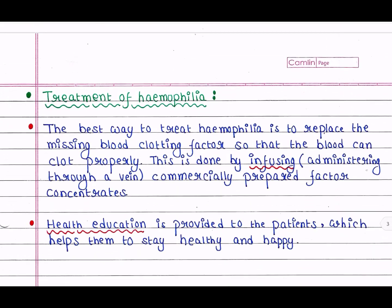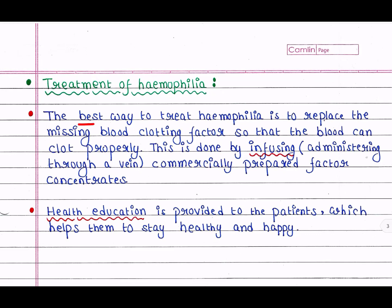The best way to treat hemophilia is to replace the missing blood clotting factor so that the blood can clot properly. For example, if a patient is lacking Factor VIII, we can insert Factor VIII artificially into their body. This is done by infusing — that is, administering through a vein — commercially prepared factor concentrates. Health education is also very important and is provided to patients to help them stay healthy.